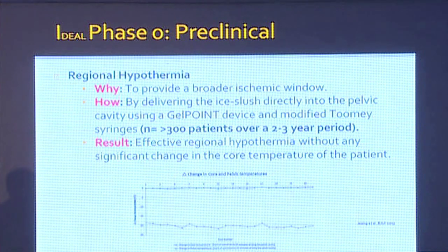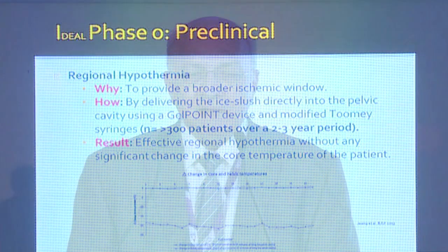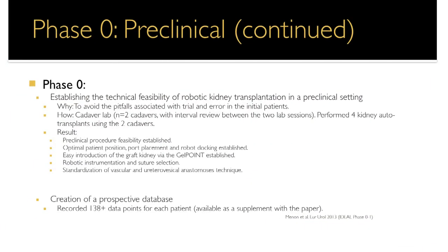The approach was to deliver ice slush directly into the pelvis. This was studied in 300 radical prostatectomy models by instilling ice into the pelvis and measuring both pelvic temperature and core body temperature. It was demonstrated that pelvic temperature could be brought down to about 20 degrees Celsius without dropping the body temperature. That was the proof of principle, and in pre-clinical studies it confirmed technical feasibility.